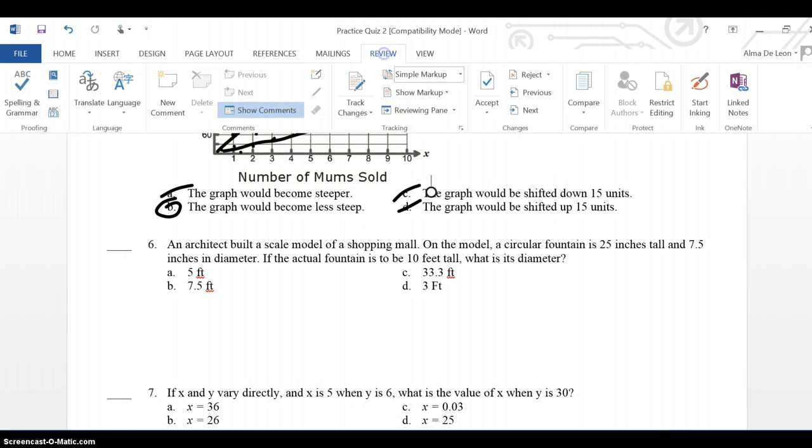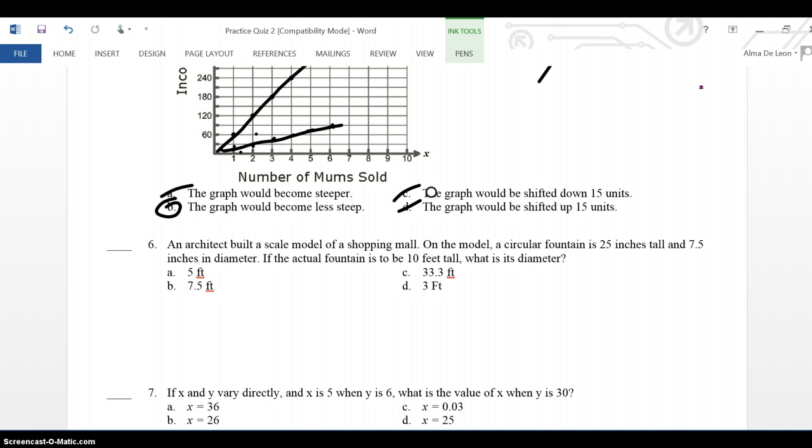Okay, let's look at number six. An architect built a scale model of a shopping mall. On the model, a circular fountain is 25 inches tall and 7.5 inches in diameter. If the actual fountain is 10 feet tall, what is its diameter? So, I'm going to start by setting up this in a proportion. I'm going to put how tall the building is on top. The circular fountain is 25 inches tall. And the diameter, I'm going to put the diameter at the bottom. The diameter here is 7.5 inches.